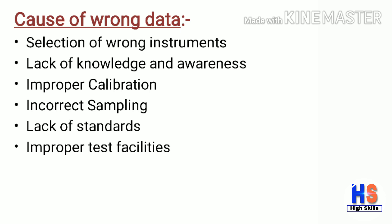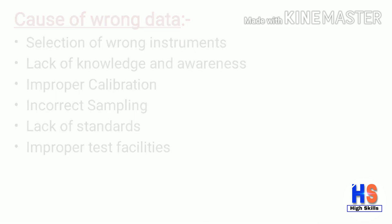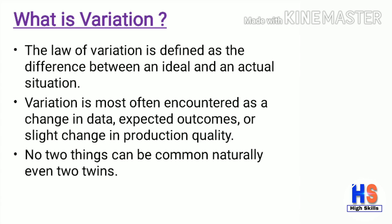Sometimes in SPC, due to wrong data we cannot get better results. What are the causes of wrong data? First is selection of wrong instruments; second is lack of knowledge and awareness; third is improper calibration; fourth is incorrect sampling; fifth is lack of standards; and sixth is improper test facilities.